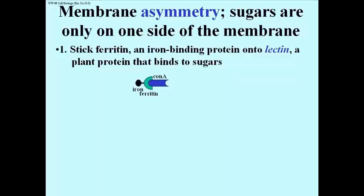there's a lectin called con-A. On the other side of the con-canavalin A is a sugar recognition site. So what lectins like con-canavalin A can do is recognize sugars and bind to them wherever they find them.